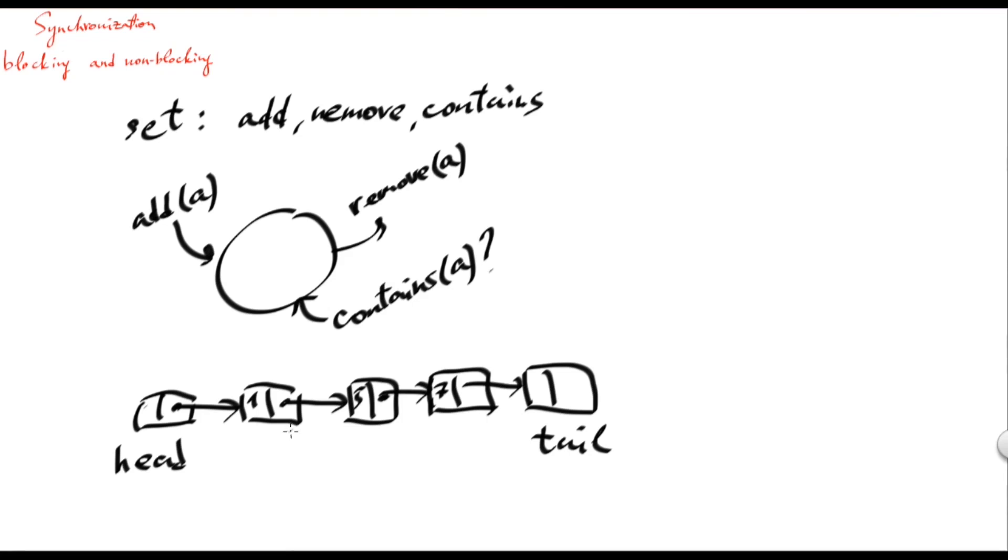For example, if you want to add an element, let's say three, you first search until you find another element which is equal or more than three. In this case, it is five, and then you would create a new node, which stores value three, which would point to the next element in the sorted order, and then you would simply shift the next pointer of the node storing one to point to three.